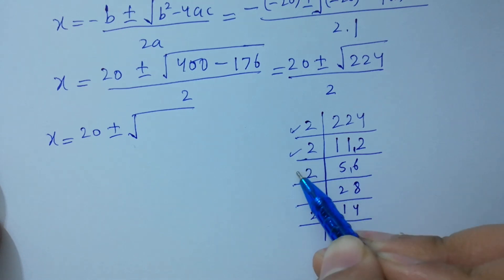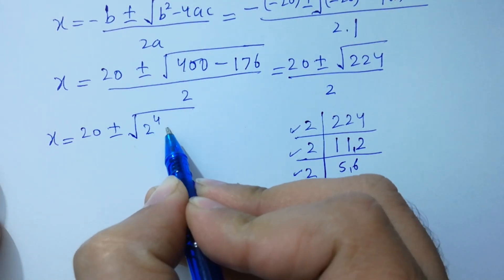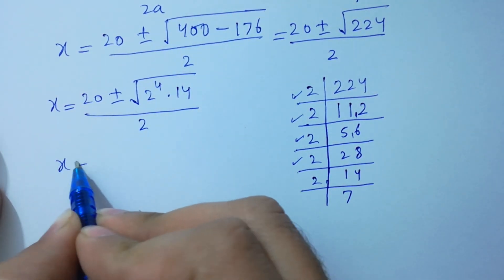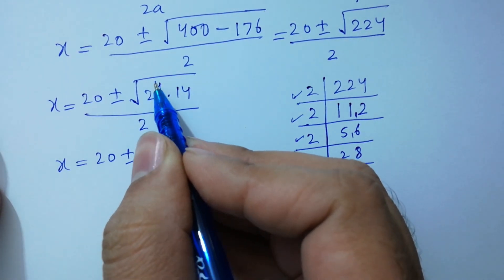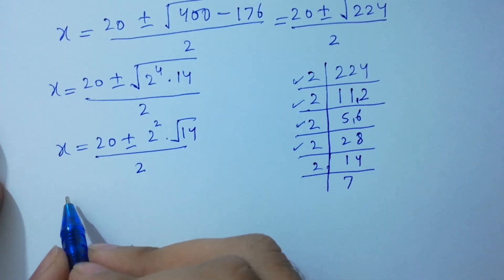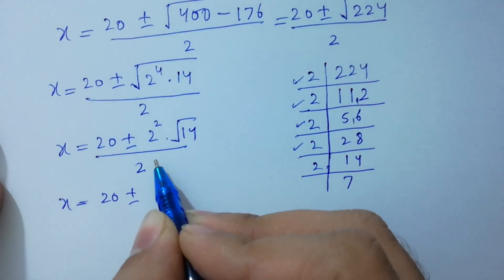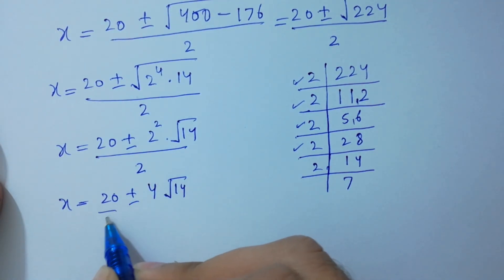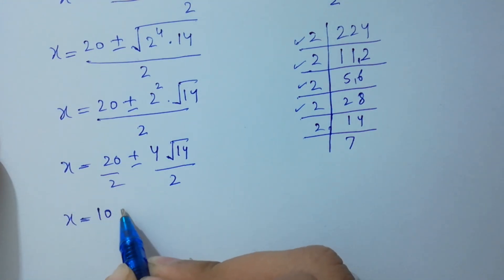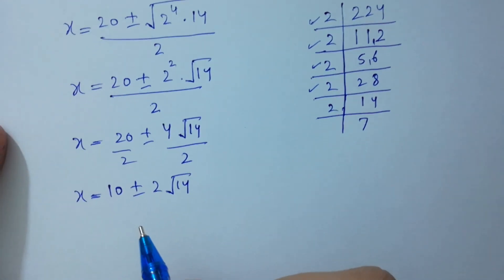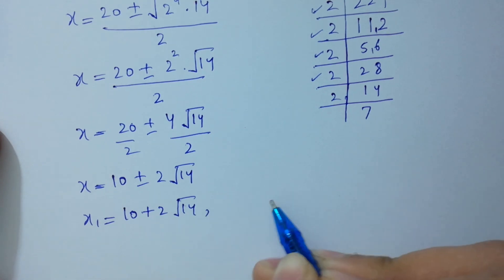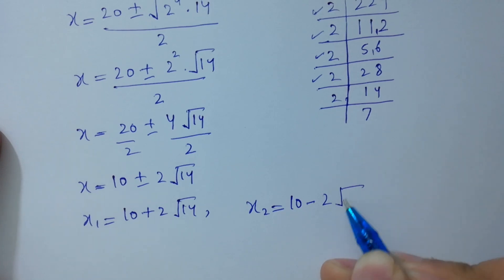The factors of 224 are 2 to the power 4 times 14, which is 2 to the power 4 times 2 times 7. So the square root of 224 is 2 squared times square root of 14, which equals 4 square root of 14. Therefore x equals (20 plus or minus 4 square root of 14) over 2, giving x1 equal to 10 plus 2 square root of 14 and x2 equal to 10 minus 2 square root of 14.